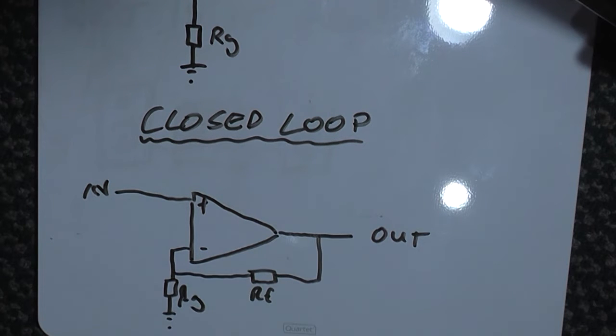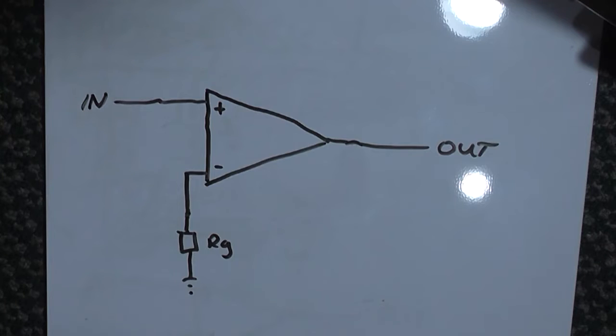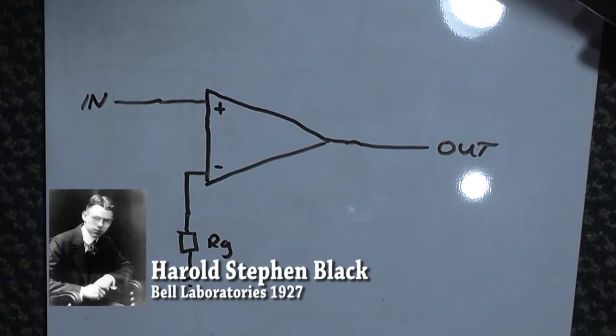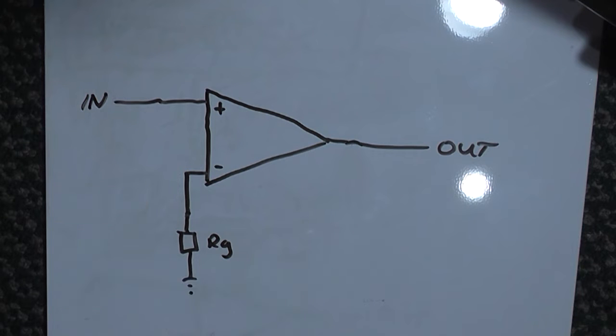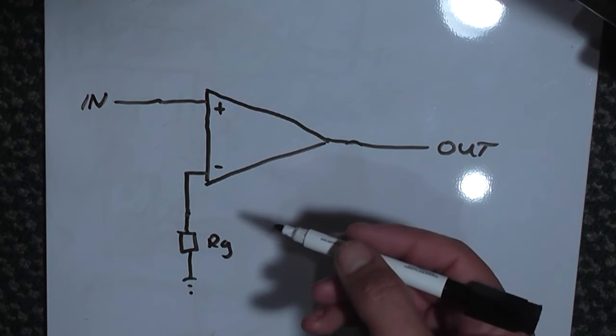Originally, the negative feedback amplifier was invented by Harold Stephen Black at Bell Laboratories in 1927. It was designed to increase the distance that telecommunications could be transmitted and lower distortion in your standard amplifier.